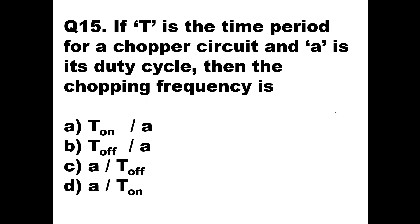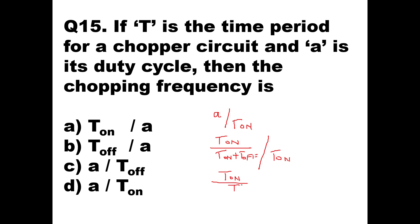Question number fifteen: if T is the time period for a chopper circuit and A is its duty cycle, what is the chopping frequency? Looking at option D, A/T1: duty cycle A = T1/(T1 + T_off) = T1/T, so A/T1 = (T1/T)/T1 = 1/T = F, which is the chopping frequency. So option D, A/T1, gives the chopping frequency, and the answer is 1/T = F.